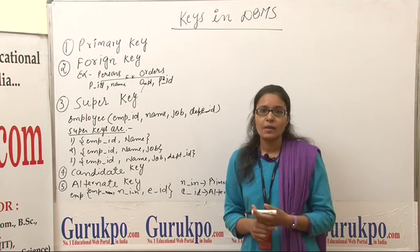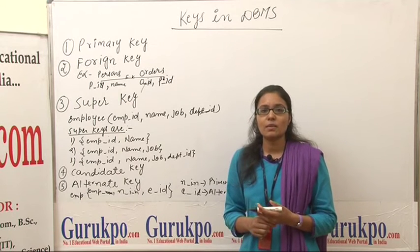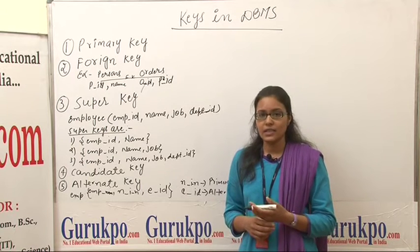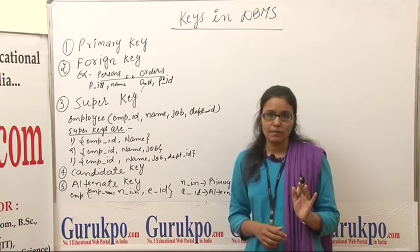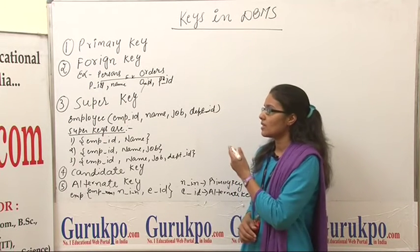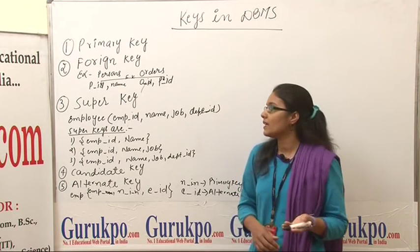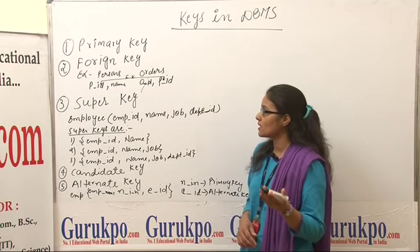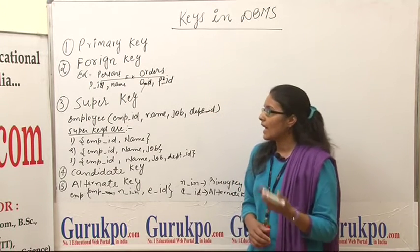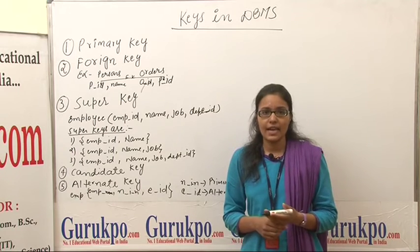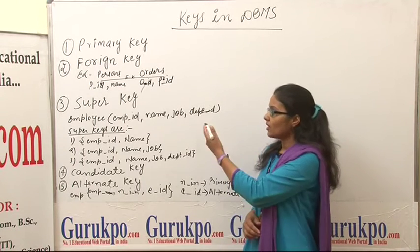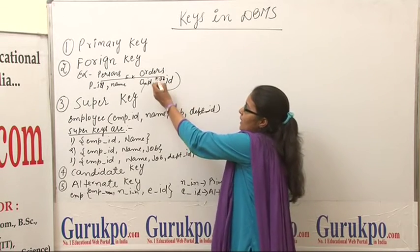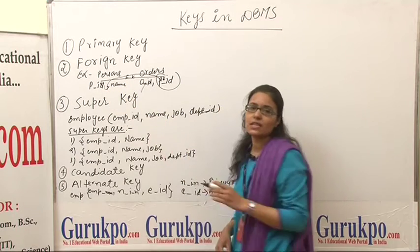The second one is foreign key. Basically, a foreign key is used to establish a link between two tables. A foreign key is used to point to the primary key in another table. For example, we have two tables: the first one is Persons and the second one is Orders. These tables have a field PID in the Persons table, and this field is also available in the Orders table. So the PID in the Persons table will be treated as primary key and the PID in the Orders table will be treated as foreign key, pointing to the primary key of the Persons table.